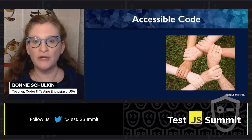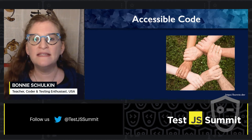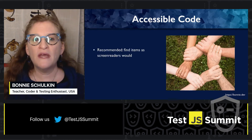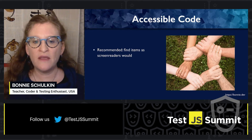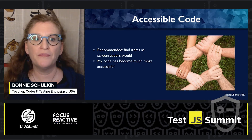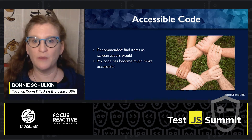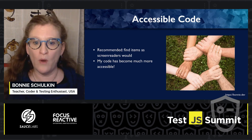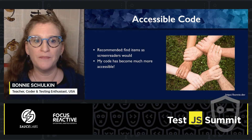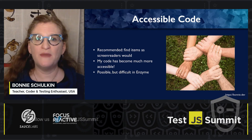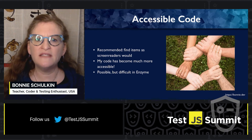Another best practice encouraged by React Testing Library is accessible code. They recommend finding items the same way screen readers or other assistive technologies would. My code has become so much more accessible since I've started using Testing Library — I've just become a lot more aware of accessibility. It's possible in Enzyme to find elements based on accessibility handles, but it's much more difficult.